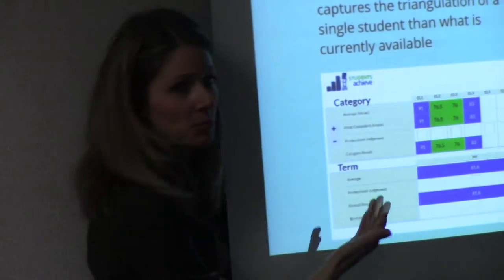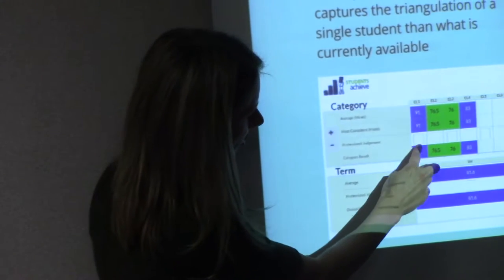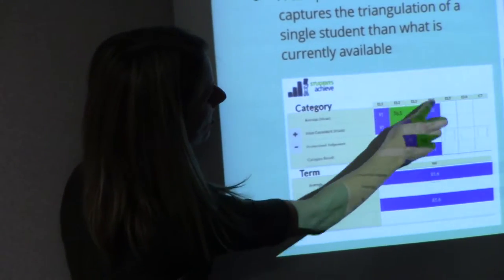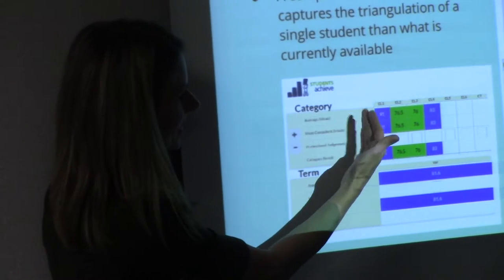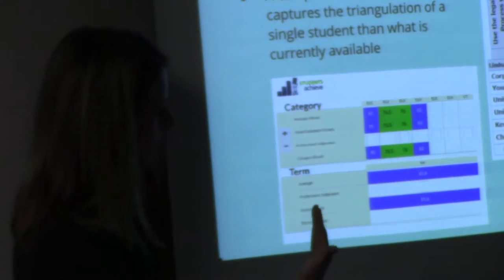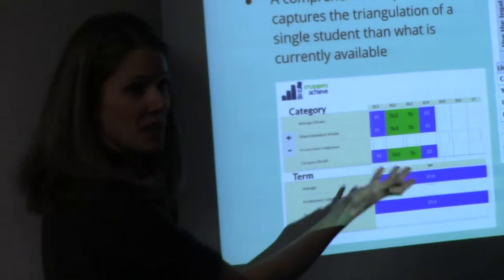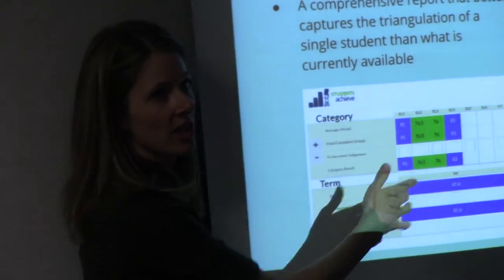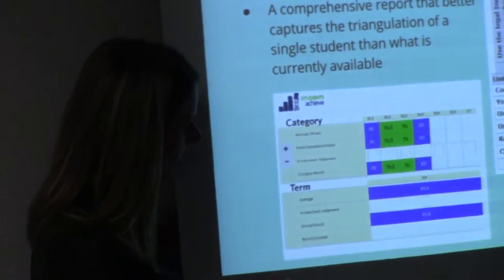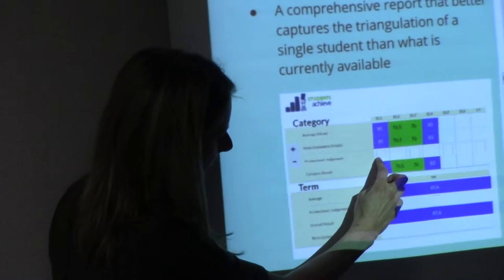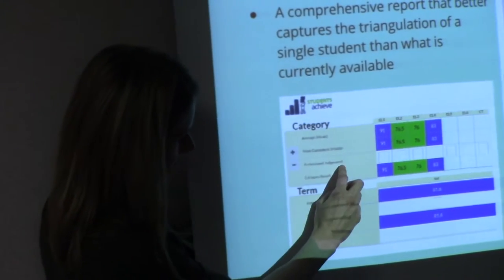These are a couple of reports that currently exist, showing essential learning one, two, three, and four. We can see the opportunities we've given students to demonstrate those essential learnings and how they're doing. If you see red in a particular area, that's something you have to go back and revisit with that student. Here's where you have the opportunity to input your professional judgment — it spits out a number, but you can adjust that.